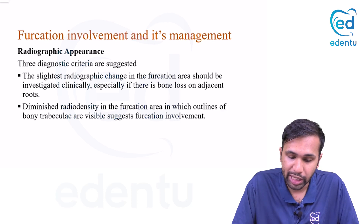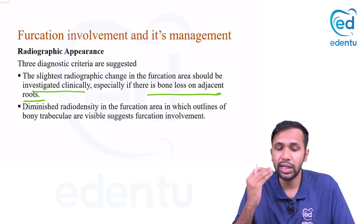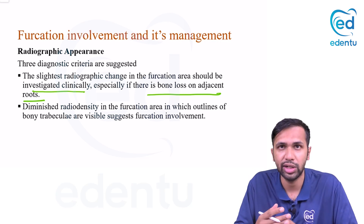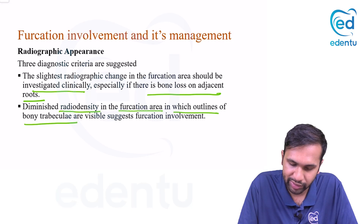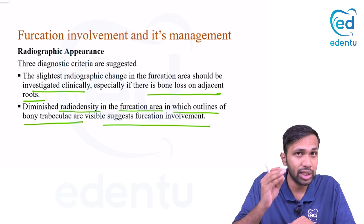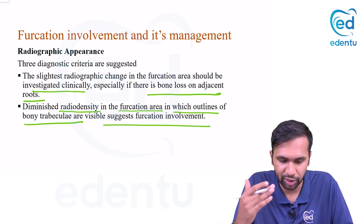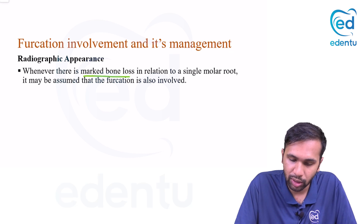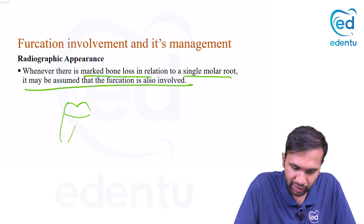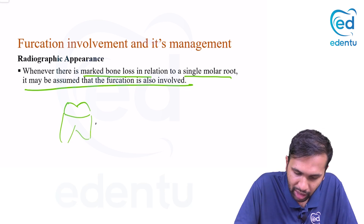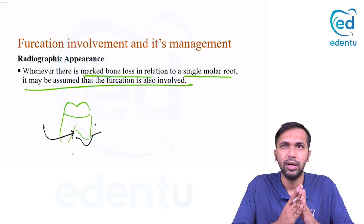For radiographic diagnosis, the slightest radiographic change in the furcation area should be investigated clinically, especially if there is periodontal bone loss on adjacent roots. Any diminished radio-opacity in the furcation area — where bone trabeculae are visible — suggests furcation involvement. Whenever there is marked bone loss in relation to a single molar root, it may be assumed that the furcation is also involved.